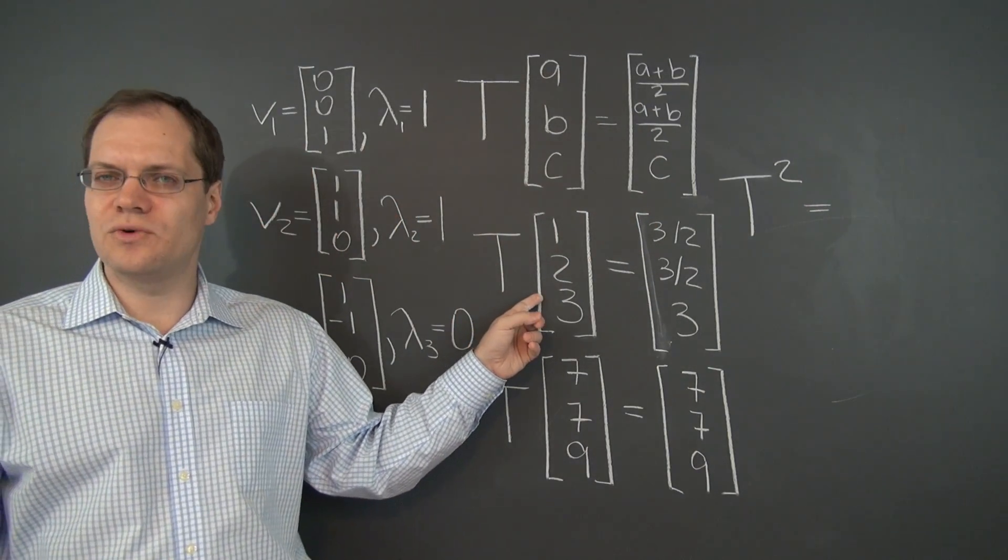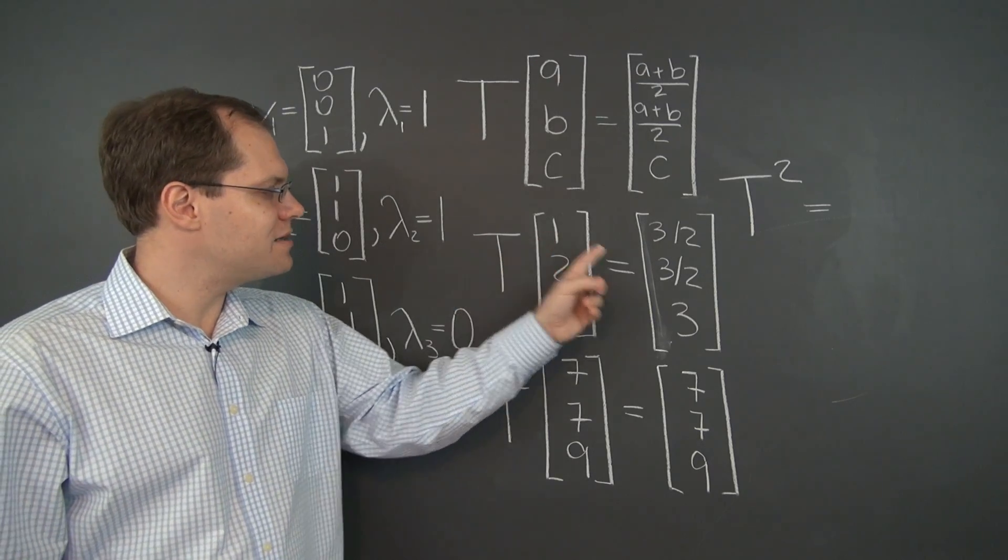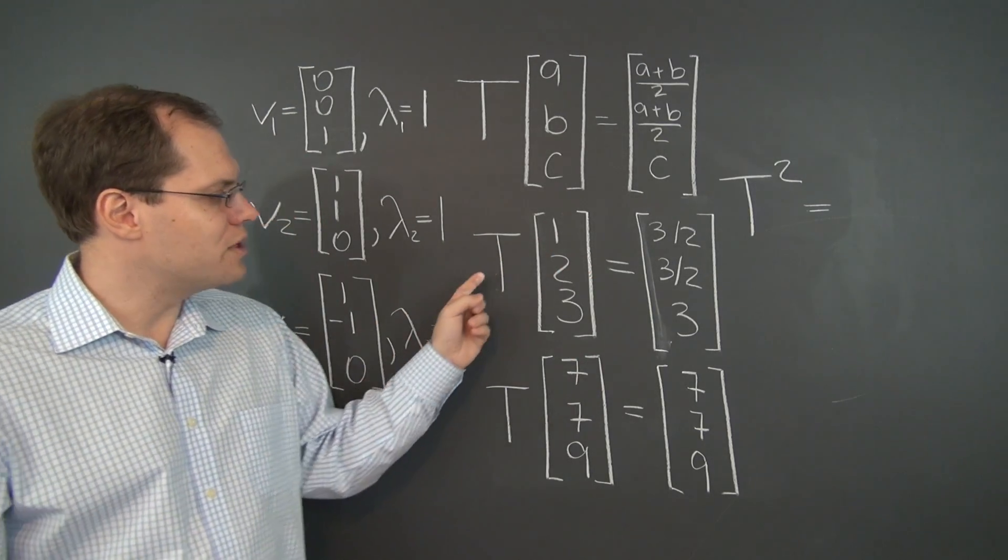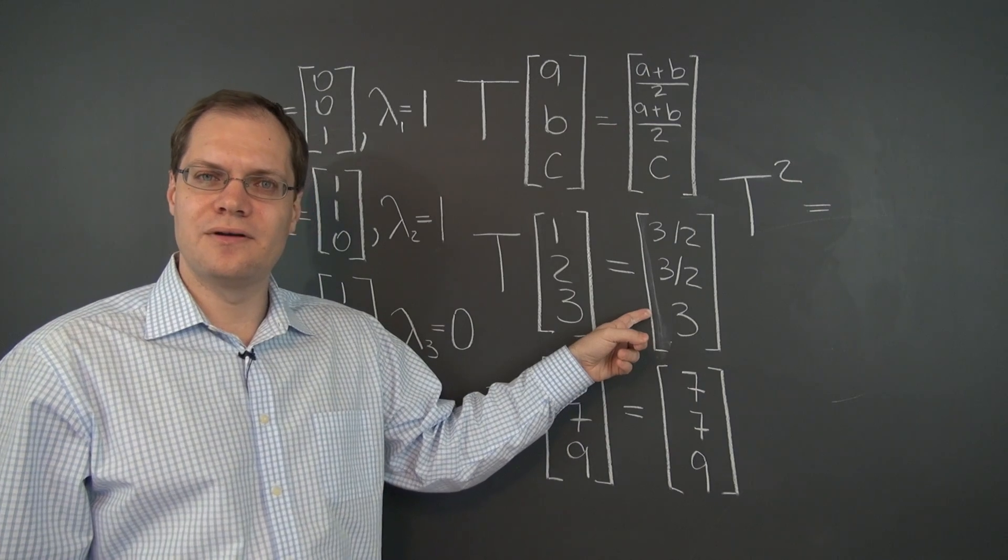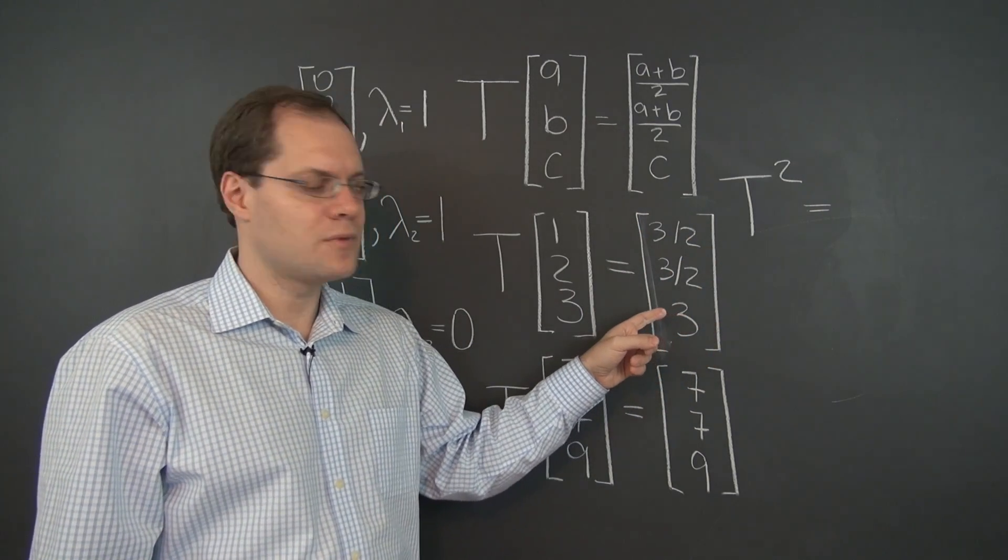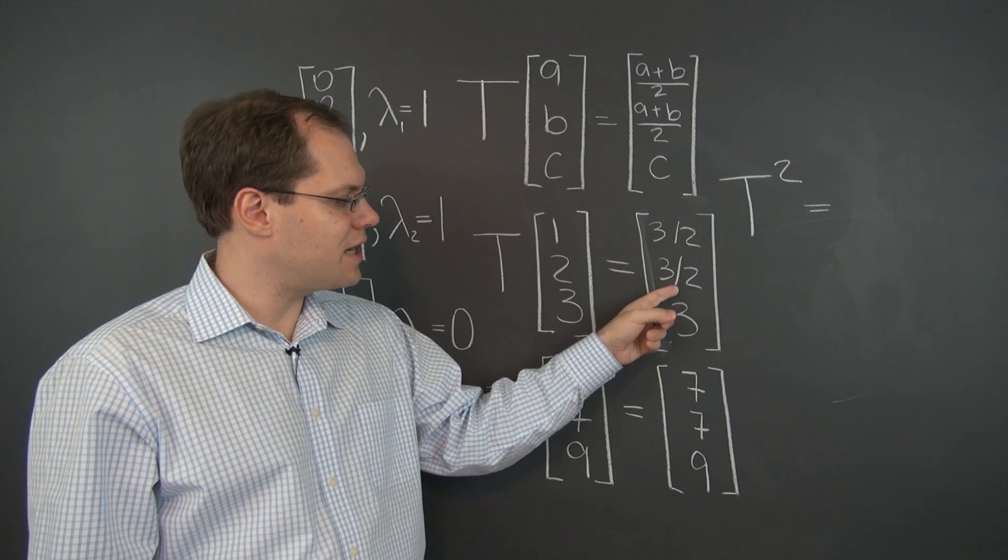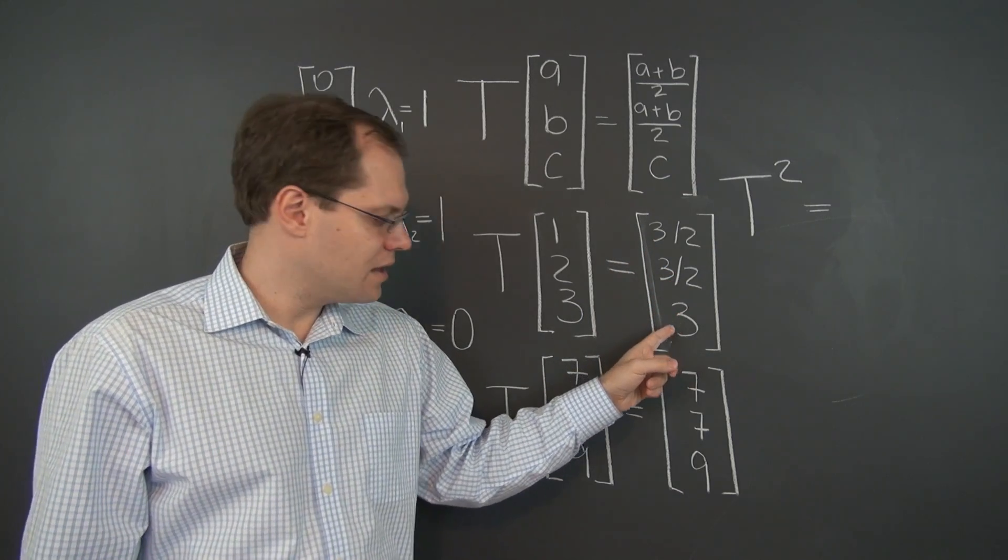Well, let's take the vector 1, 2, 3, and apply the transformation to the vector 1, 2, 3 once. The result is here. And applying it a second time would still give us 3 halves, 3 halves, 3.